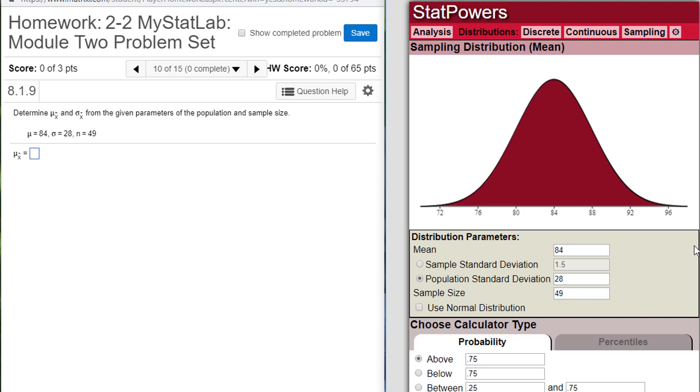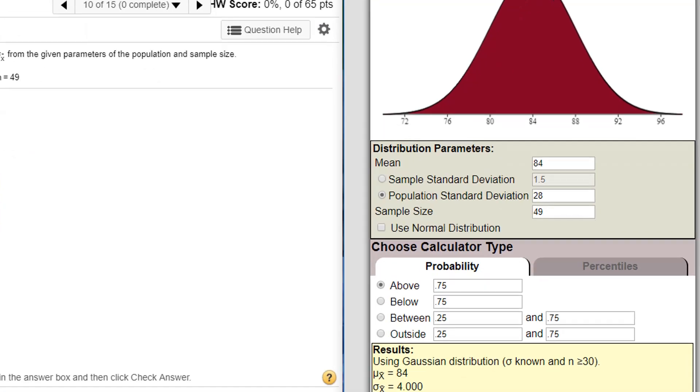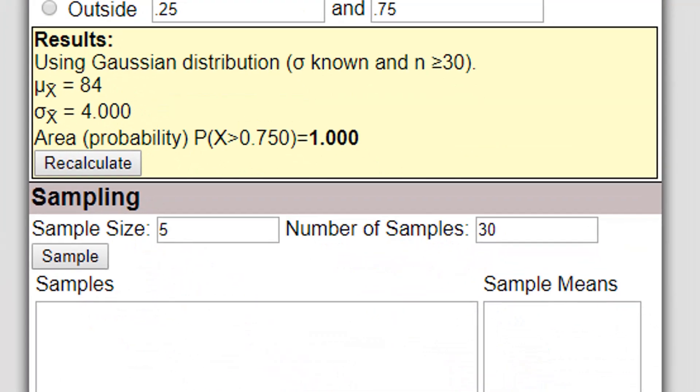Now if we go down just a little bit, I'm going to scroll up and show you this is telling us that the mean of x-bar is 84. The standard deviation of x-bar is 4. That's the standard error. So it's calculating that stuff for us.